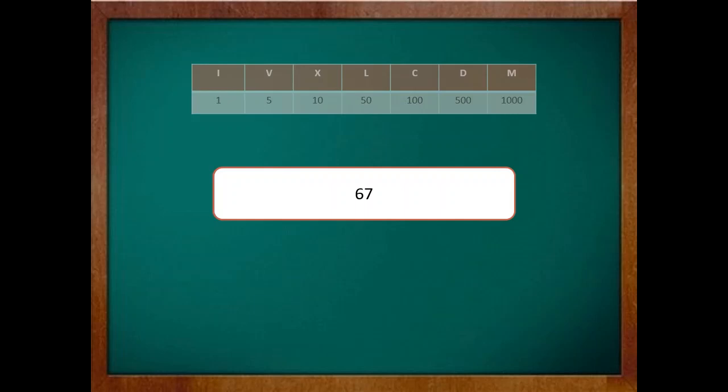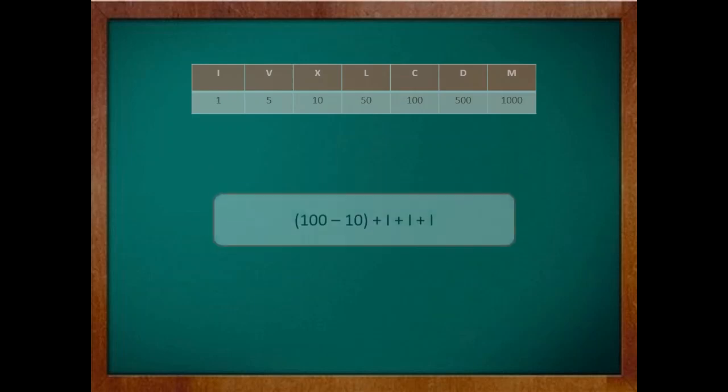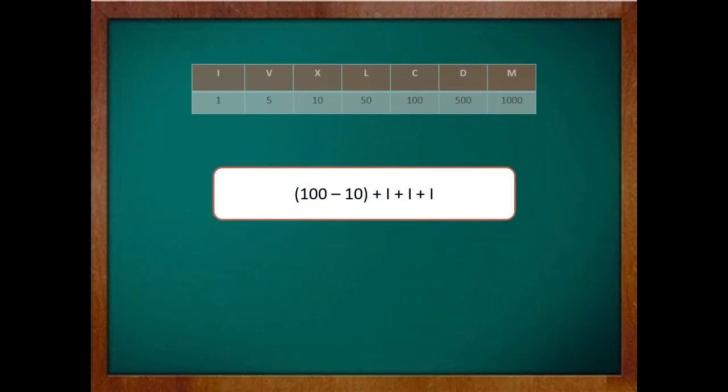Let's take another example XCIII. Again let's write the decimal number corresponding to each symbol. So it is 10-100-1-1-1. Now remember the rule of subtraction. If the number on the left is smaller than the number on the right it has to be subtracted from the number on the right. Therefore in this case 10 has to be subtracted from 100. So the number becomes 100 minus 10 plus 1 plus 1 plus 1 which is 93.